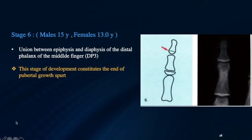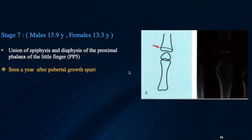In Stage 6, there is union between the epiphysis and diaphysis of the distal phalanx of the middle finger, denoted as DP3. This stage constitutes the end of the pubertal growth spurt, which occurs approximately in males around 15 years of age and in females around 13 years of age. In Stage 7, which is about one year after the pubertal growth spurt, there is union of the epiphysis and diaphysis of the proximal phalanx of the little finger, denoted as PP5.